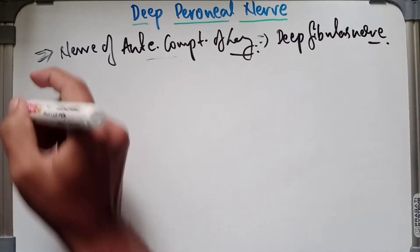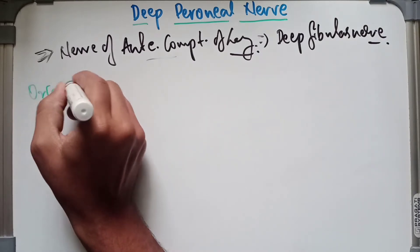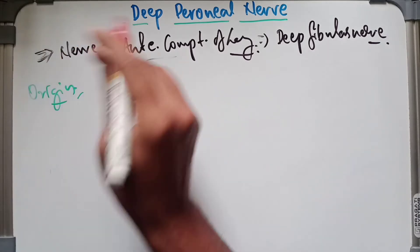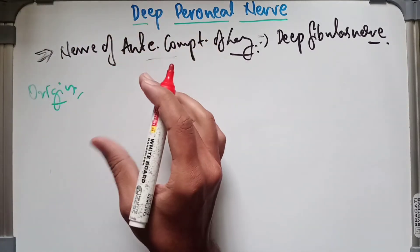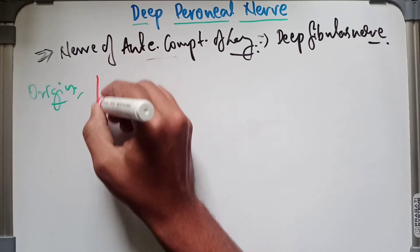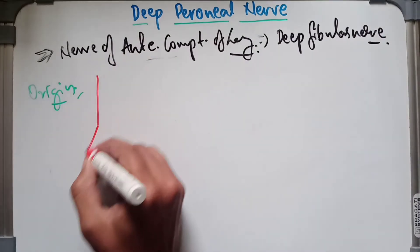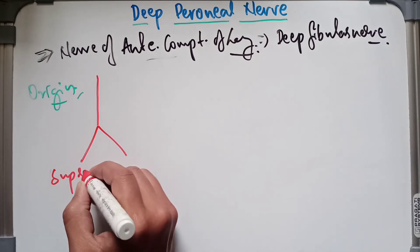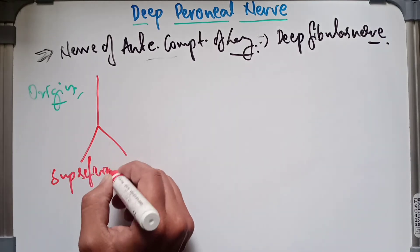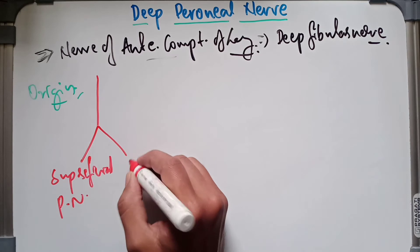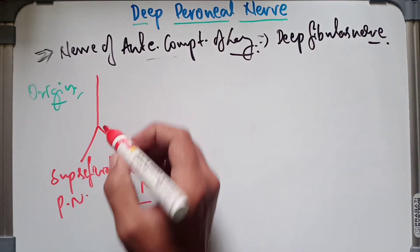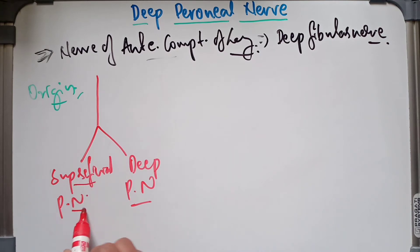Moving on to the origin of the deep peroneal nerve: it is one of the two terminal branches of the common peroneal nerve. The common peroneal nerve gives two branches — the superficial peroneal nerve and the deep peroneal nerve.